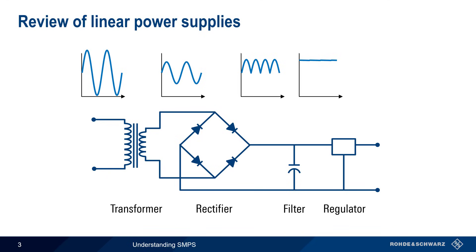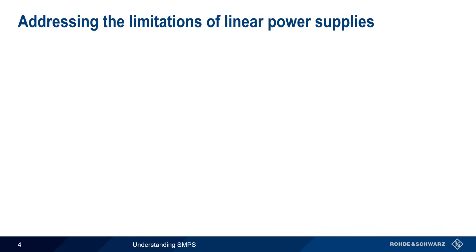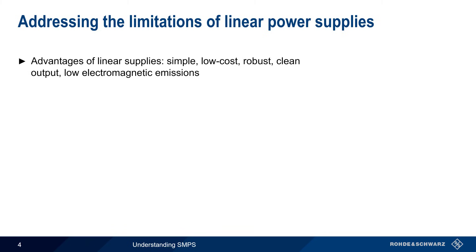Optionally, a regulator is used to keep the output voltage constant when the input voltage or load impedance changes. Linear power supplies have a number of advantages. They're easy to design, low cost, and robust. They usually produce a relatively clean output and have very low electromagnetic emissions.